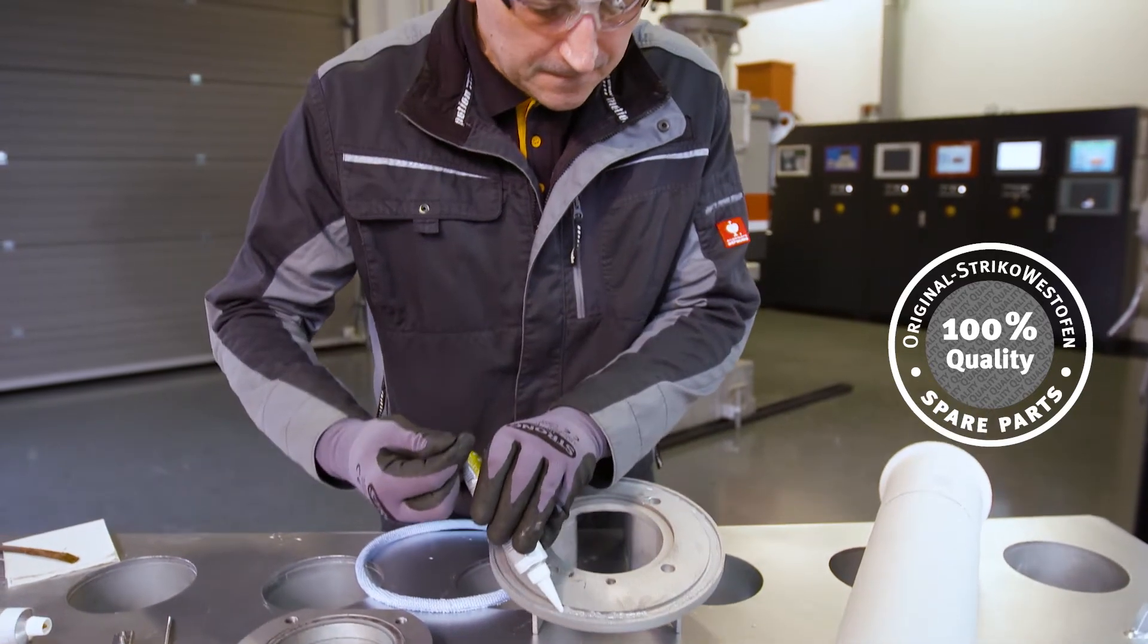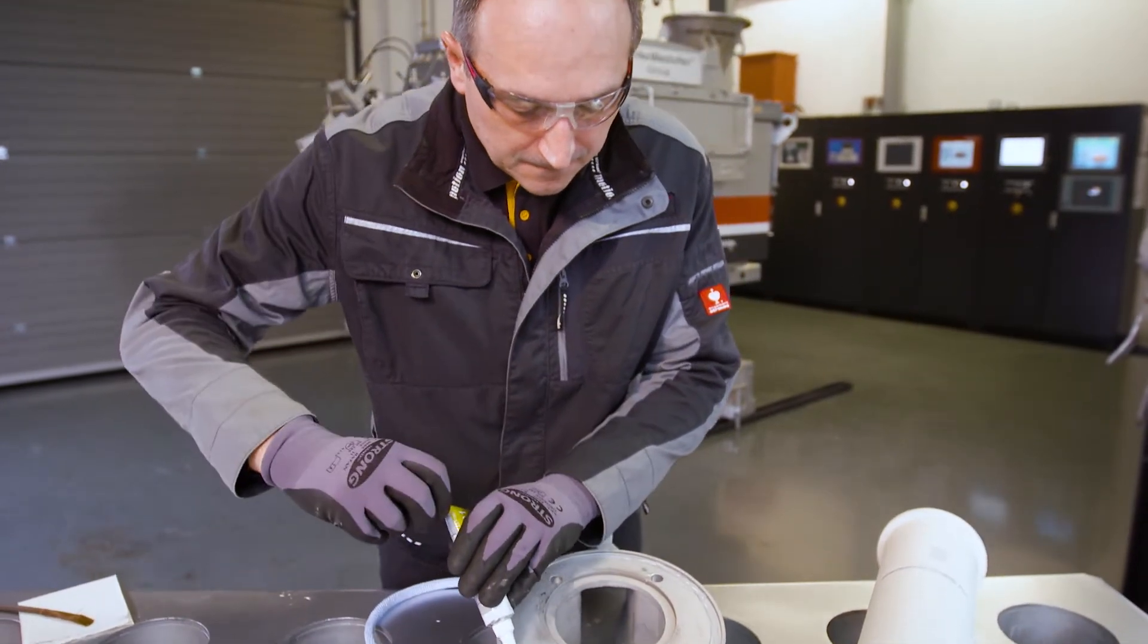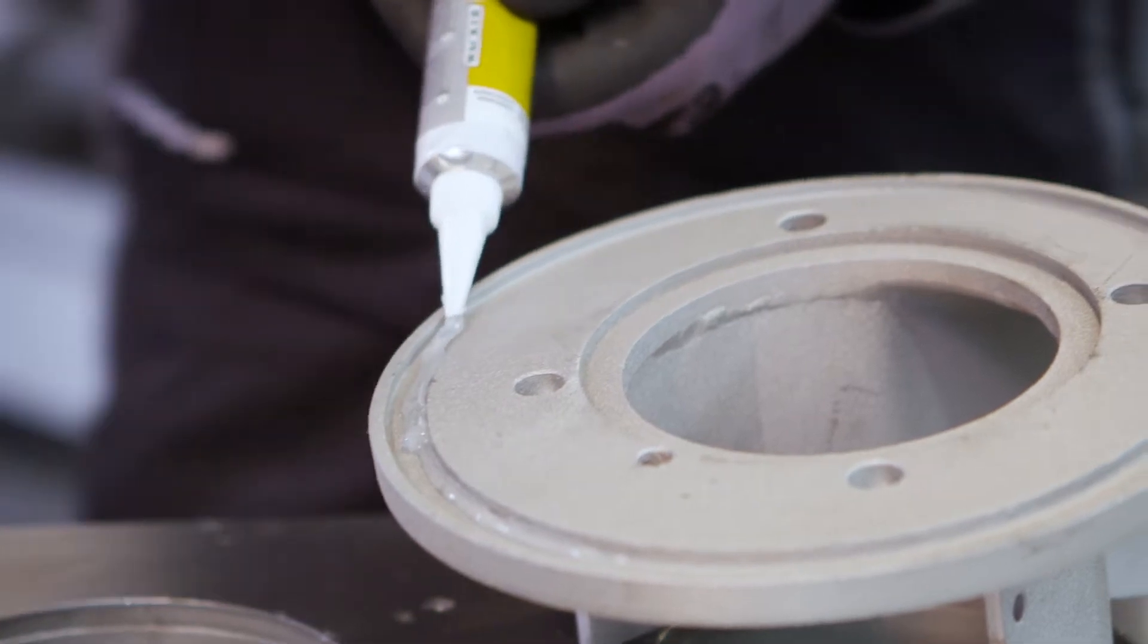Then you can start. First, you apply the silicone glue evenly onto the back of the steel insert.